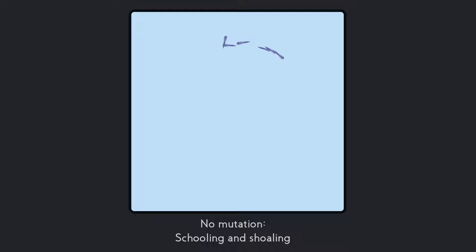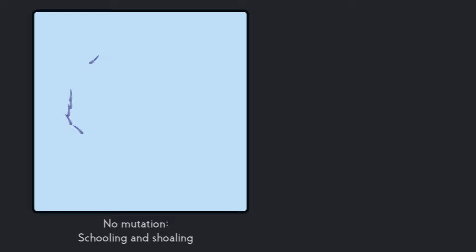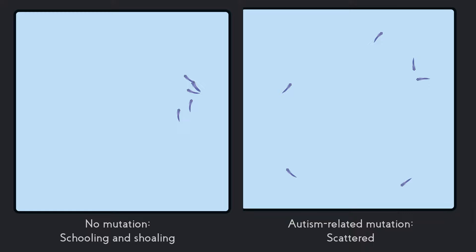One of the mutations we made in the fish was to knock out a gene that's related to autism. The phenotype we found afterwards was one in which the fish were scattered. They seemed not to interact at all, or sometimes they would barely get close to each other and then separate away.